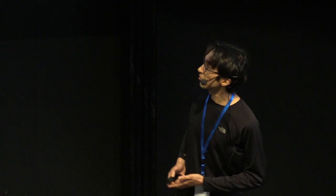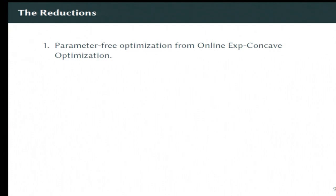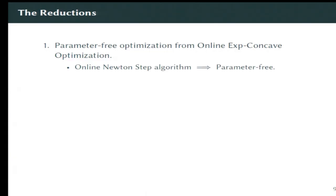So the first one is that we can get parameter-free optimization in the online linear optimization problem from exp-concave optimization. So exp-concave functions are sort of like a midway point, if you like, between linear functions and strongly convex functions. And it turns out that what this means is that if you take an exp-concave optimization algorithm, like online Newton's step, you can actually convert it in a black box way into an online linear optimization problem algorithm that's parameter-free.